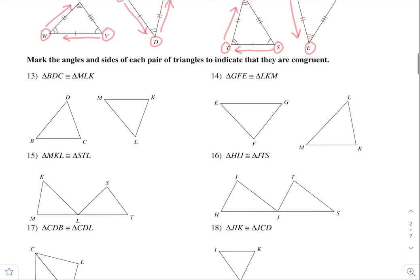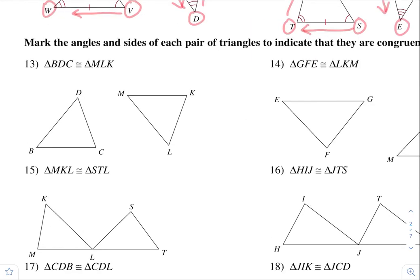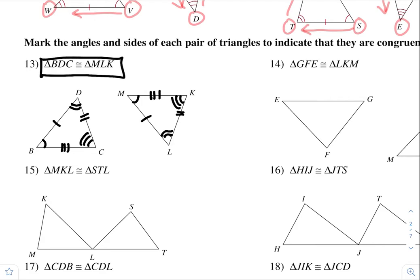For this one, you basically just have to mark the triangle up based on the congruency statement. I see B and M — they are corresponding angles and they're congruent. D is congruent to L, second letters. And C is congruent to K. Now for the sides: BD is congruent to ML, DC is congruent to LK, and CB is congruent to KM.